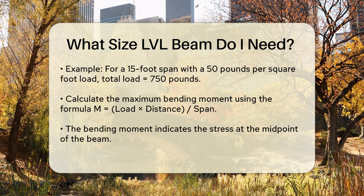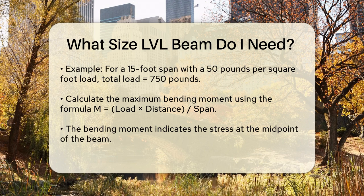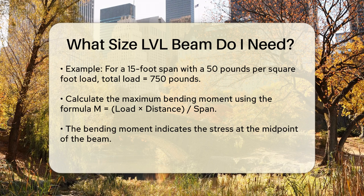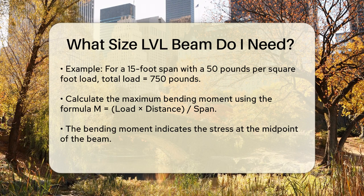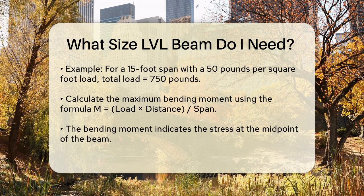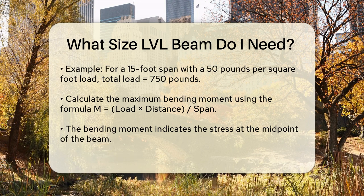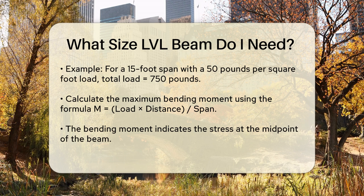Now, you need to calculate the maximum bending moment. This is done using the formula M equals load times distance for span. This tells you the stress the beam will endure at its midpoint. For example, if the load is 750 pounds and the distance to the load is half the span, since it's a uniform load, the bending moment would be calculated accordingly.